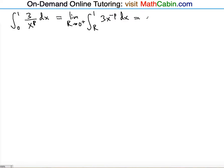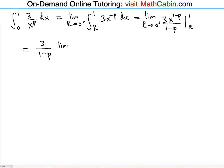Applying the power rule, the power increases by 1, giving negative p plus 1 in the antiderivative — that is, 1 minus p. So we have the limit as r approaches 0 from the right of 3 times x raised to the 1 minus p power, divided by that resulting power 1 minus p, evaluated from r to 1. We can factor out 3 over 1 minus p and write the limit as r approaches 0 from the right of x to the 1 minus p, evaluated from r to 1.